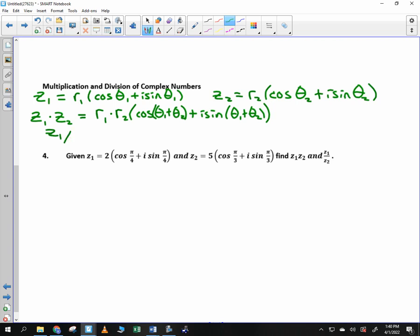Z sub one divided by Z sub two. Who wants to guess what I do with the r values when I'm dividing? I do divide them. So r sub one over r sub two. Does anybody want to guess what I do with the theta values? I do subtract them. So the cosine of theta sub one minus theta sub two plus i sine of theta sub one minus theta sub two.